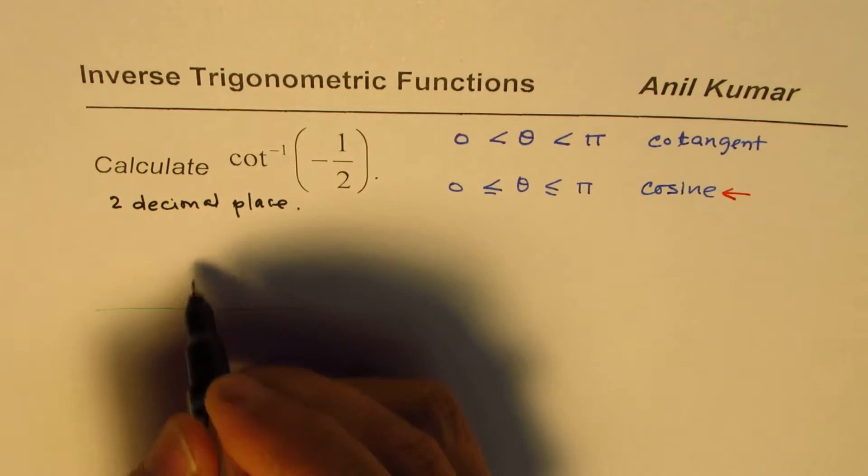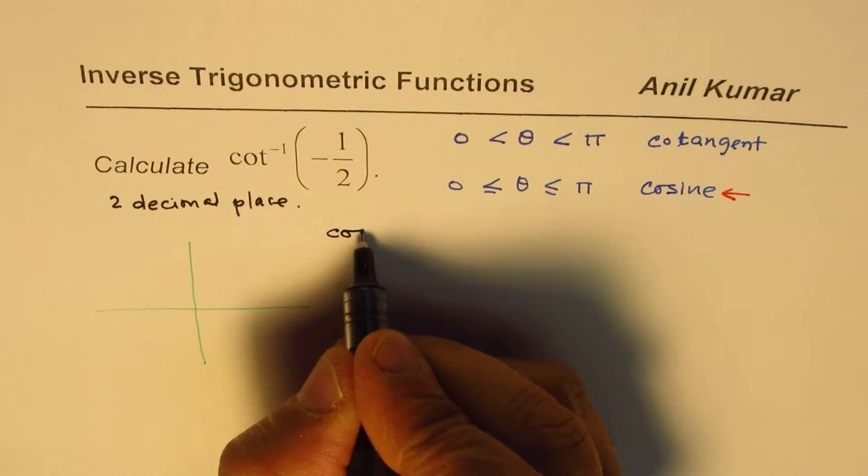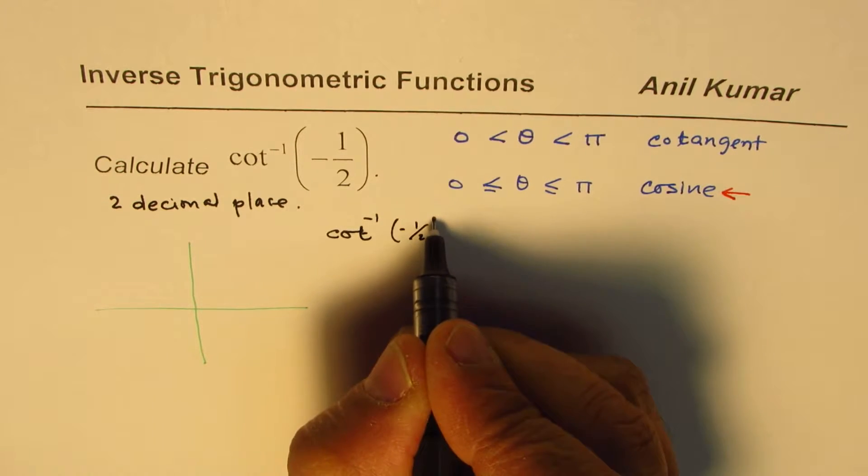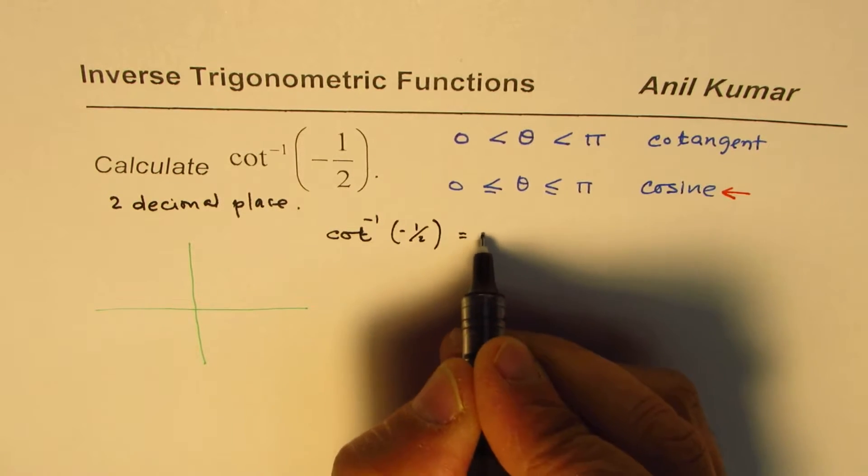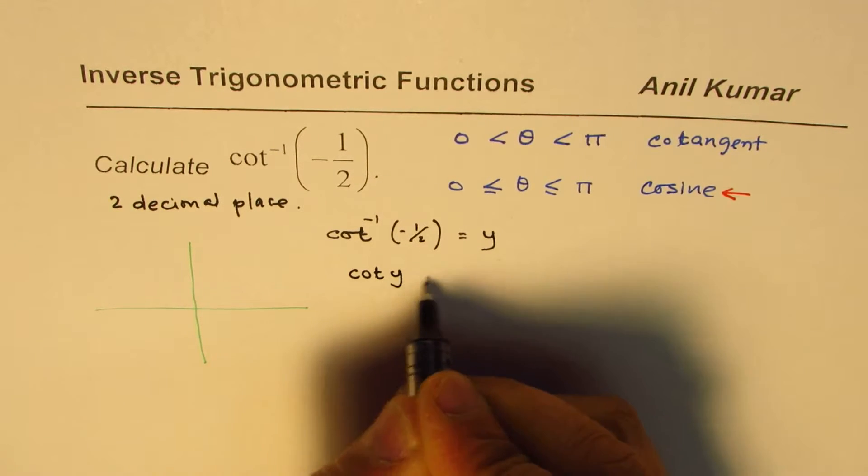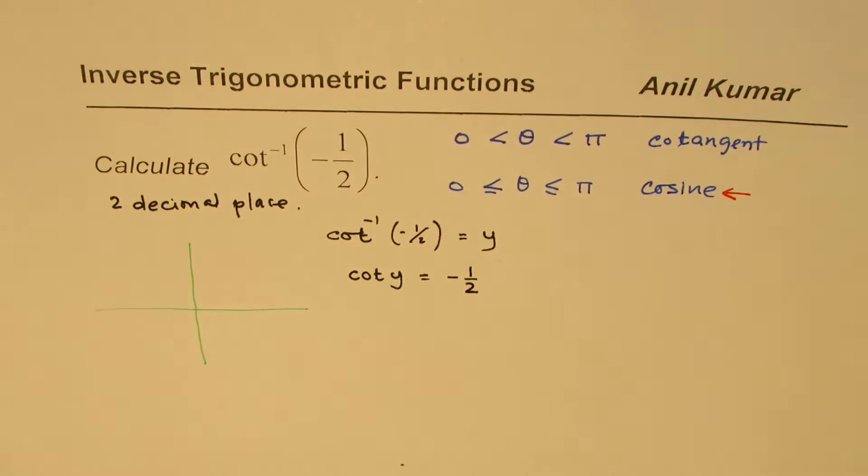For that, we'll take the help of sketching a triangle. When we say cot inverse of minus half, let us say is equals to y. In that case, we can say cot y is equals to minus half. So, cot y is minus half.